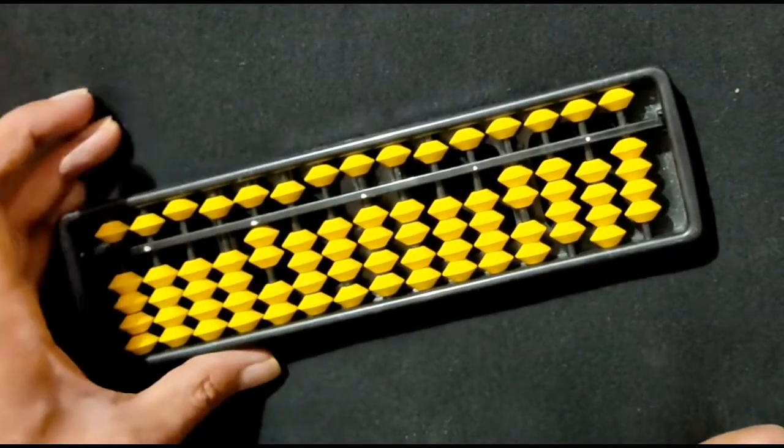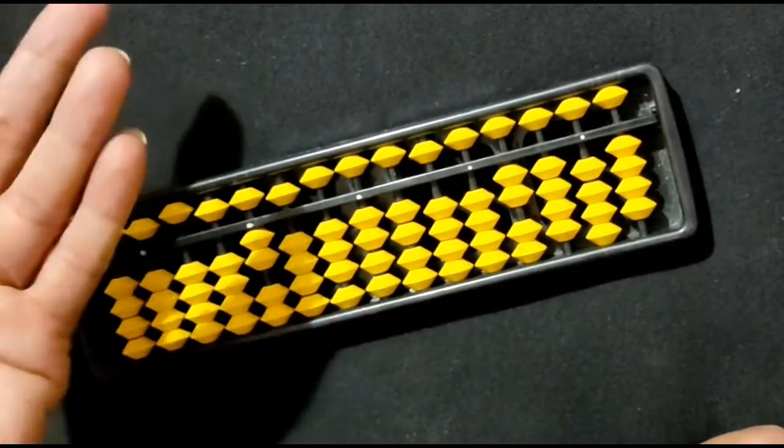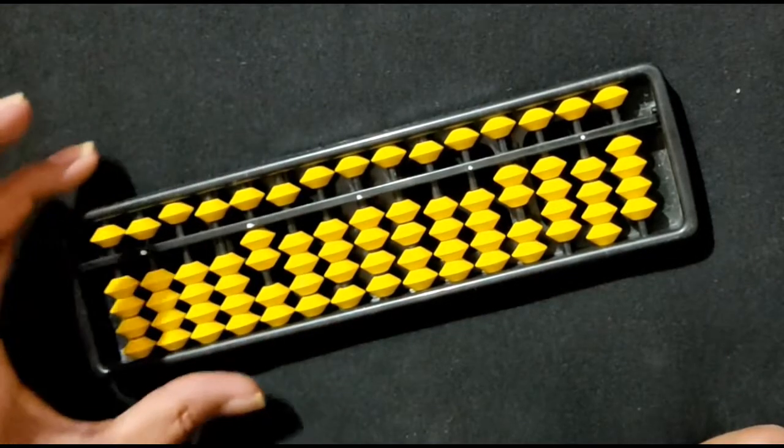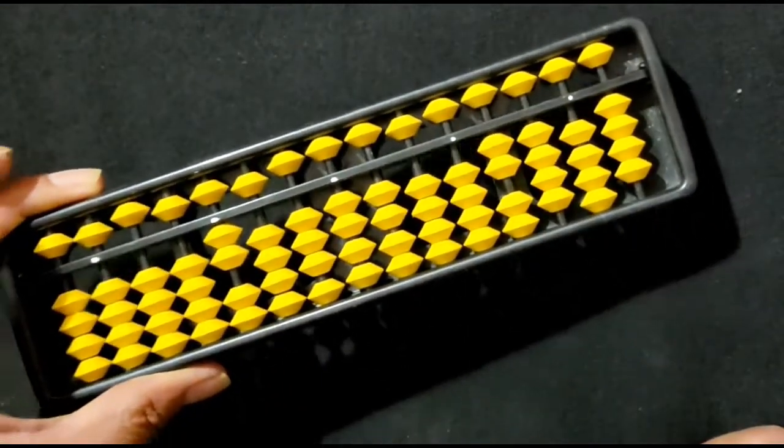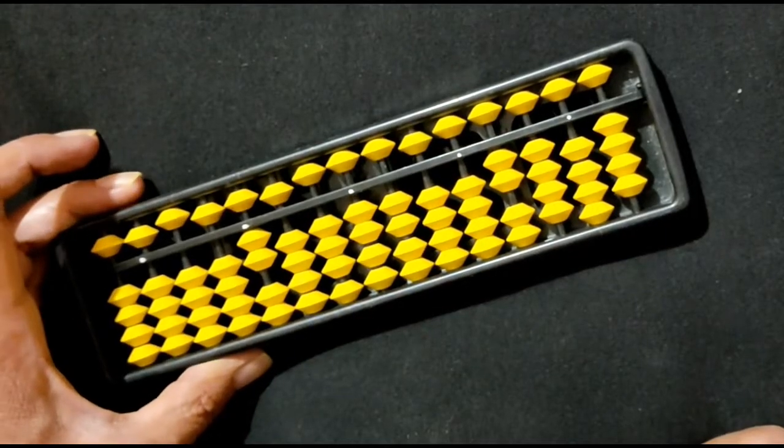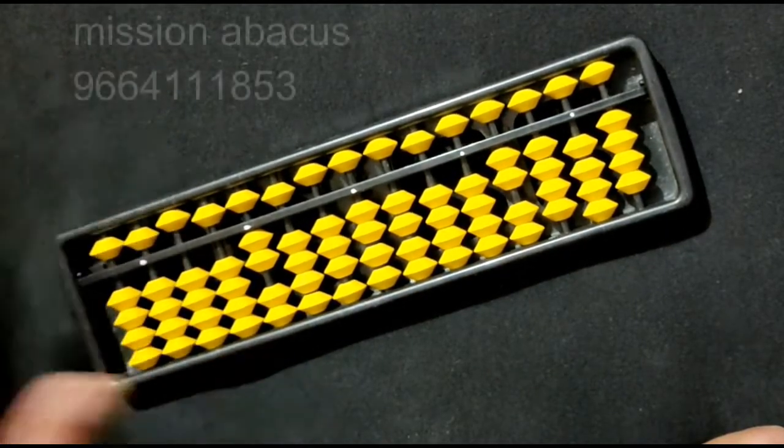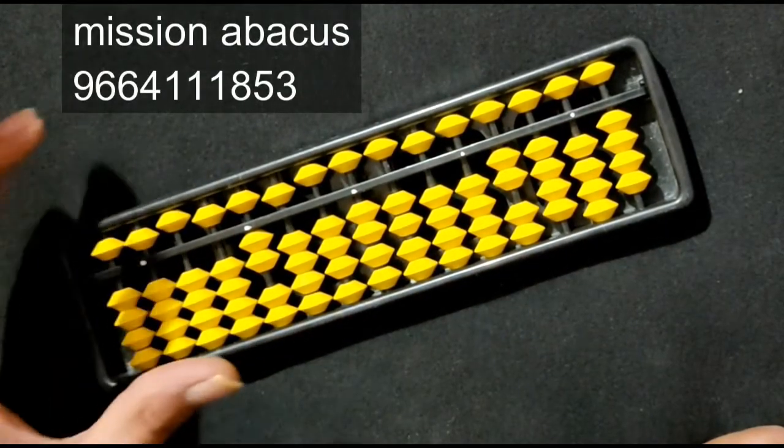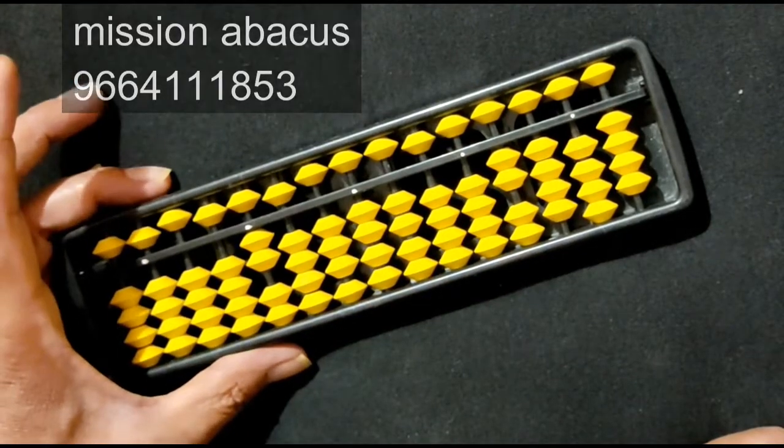So, first we have learned how to hold an abacus: left hand, last two fingers and thumb like this, and never lift it. And while doing the question, never leave it like this. No, always we should hold the abacus like this.